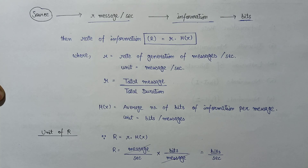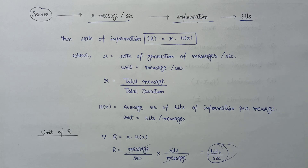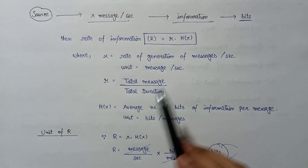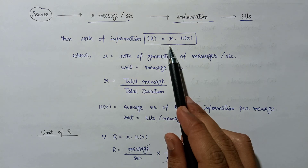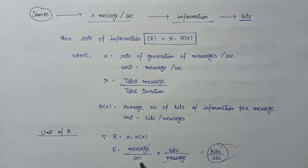So we can say that the unit of capital R, the rate of information, is bits per second. This covers the basic introduction to information rate, as well as small r, H(x), and their respective units, and also the unit of capital R.